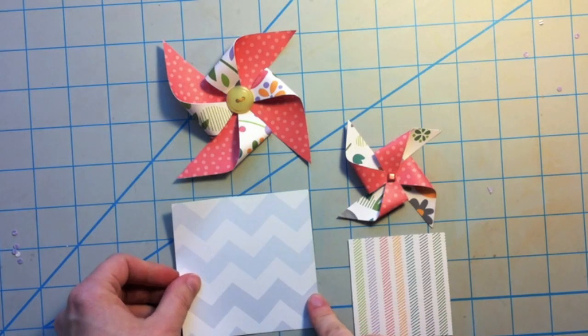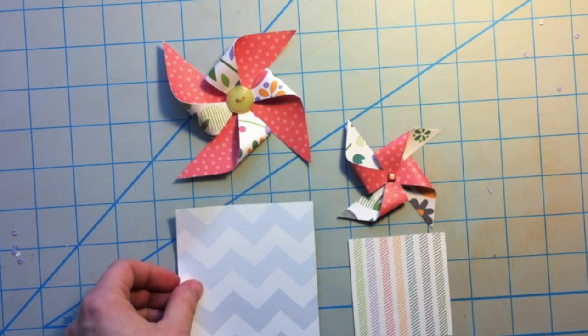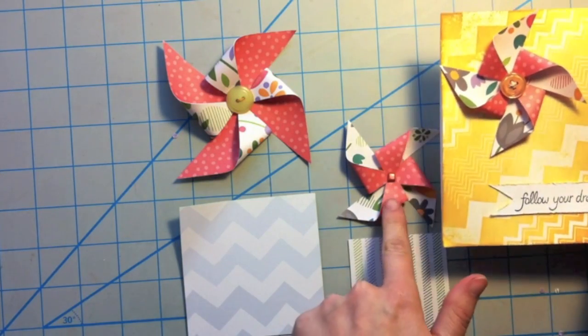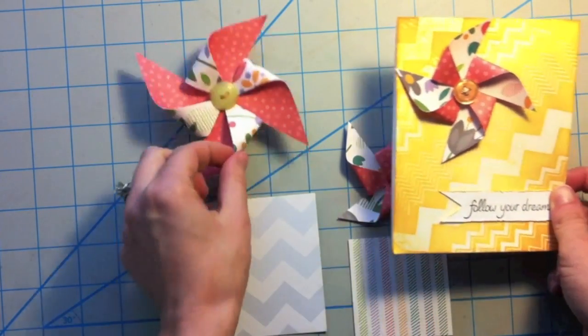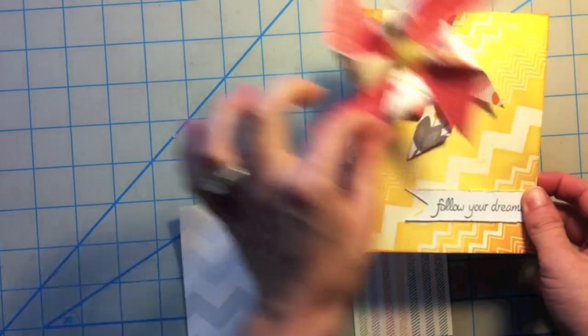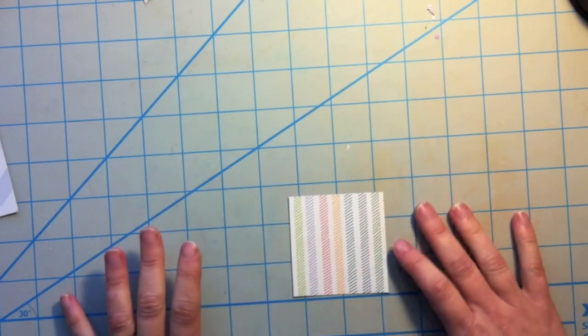Now these two pinwheels I've made in the past are two different sizes. The smaller one is a two and a half inch square and the larger one is a three and a half inch square. Now on my card I used the two and a half inch square but you could custom make these pinwheels to whatever size you want for whatever project you're working on.